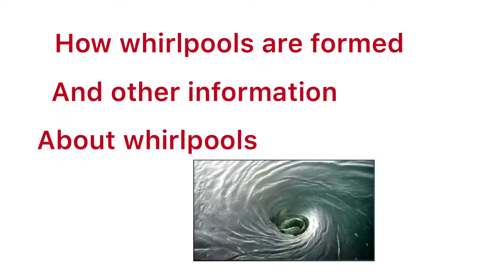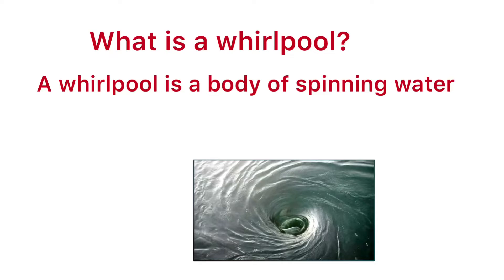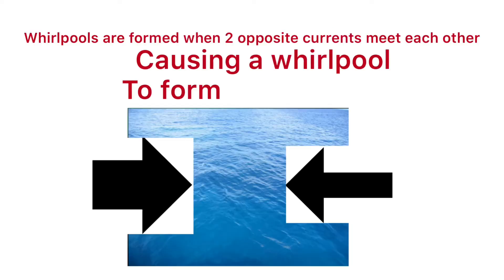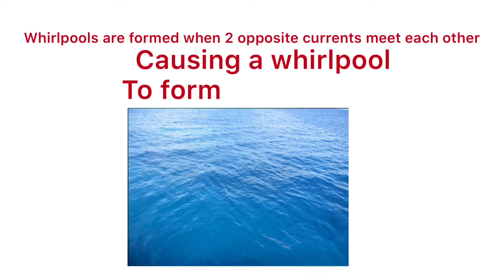Hey guys, it's me Brendan, and I want to be explaining how whirlpools are formed and other information about them. A whirlpool is a body of spinning water caused in oceans or other places where water is. Whirlpools are formed when two currents meet each other, causing a whirlpool to form.